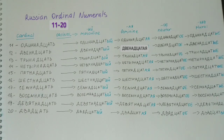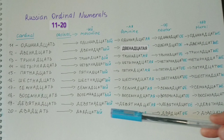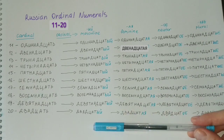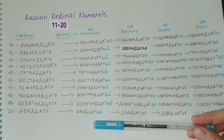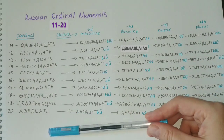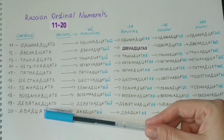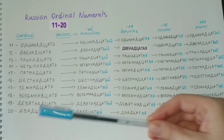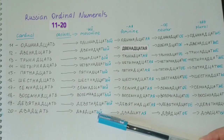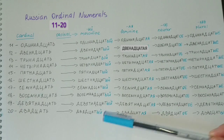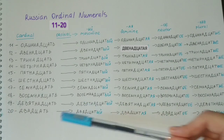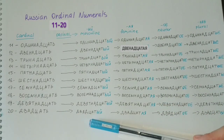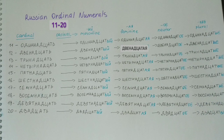Also remember that with the 20th numeral you have to change the stress position. In the cardinal двадцать, the stress falls on the first syllable, but in the ordinal forms — двадцатый, двадцатая, двадцатое — it falls on the second syllable. That is what you have to remember.